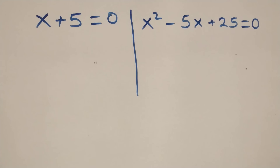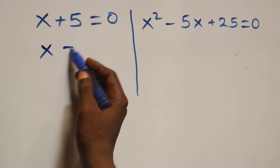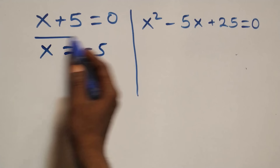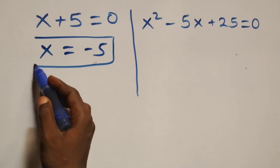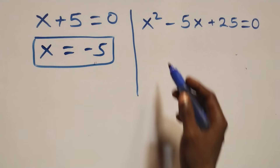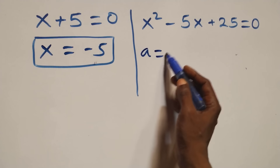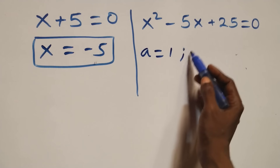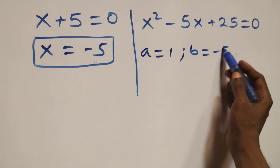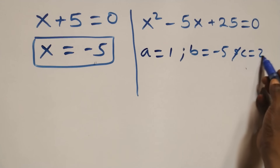Solving the first factor, this gives us x equals to minus 5, which is a real solution. And from the quadratic factor, we have a quadratic equation where a equals to 1, b equals to minus 5, and c equals to 25.